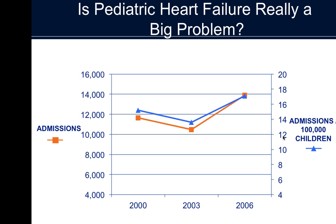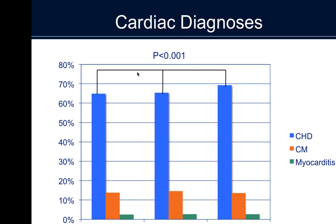How big of a problem is heart failure in pediatrics? It turns out it's a pretty big problem. Overall, if we look throughout the United States, there are somewhere between about 14,000 to about 16,000 admissions for heart failure every year. On a population level, that's about 16 to 18 admissions per 100,000 children. When we talk about very serious acute diseases that require hospital admission with a lot of morbidity and mortality, heart failure is actually one of the more common. Severe sepsis is somewhere around 50,000 per 100,000 children, so it's not quite as common as sepsis, but it's really one of the more prevalent serious conditions of childhood.